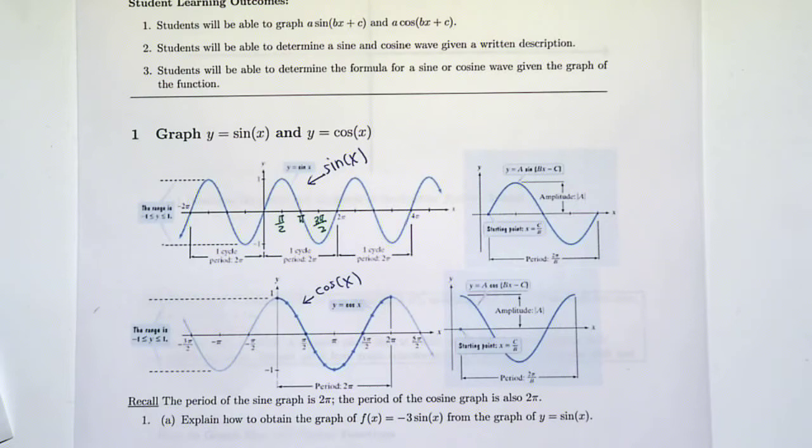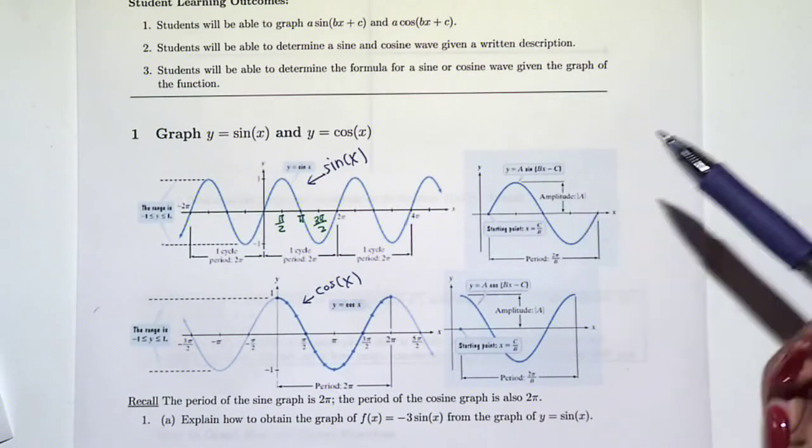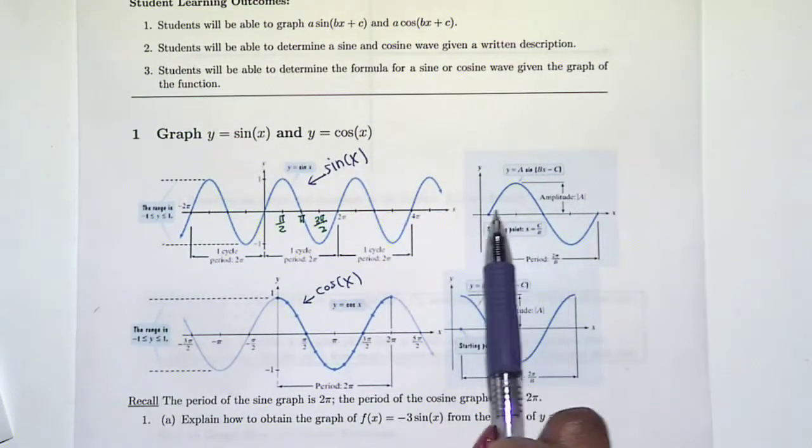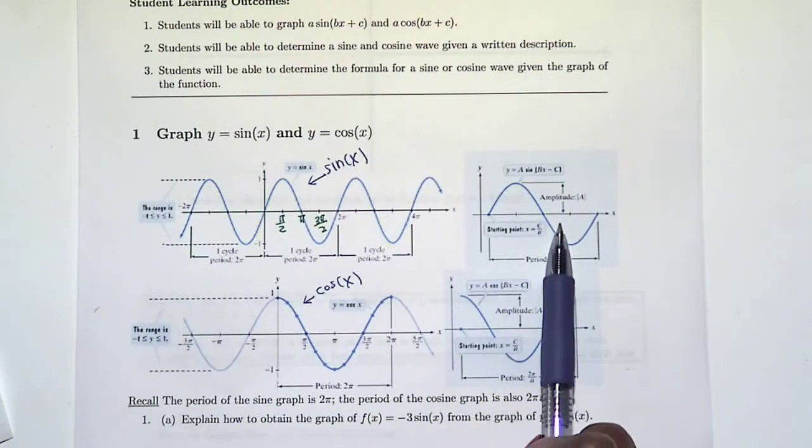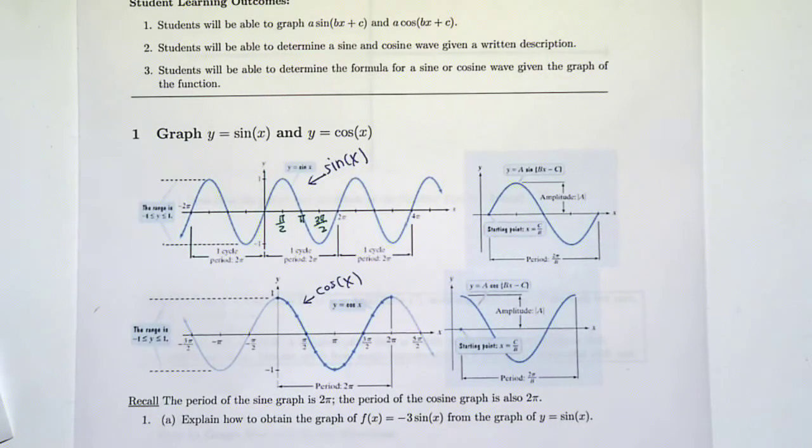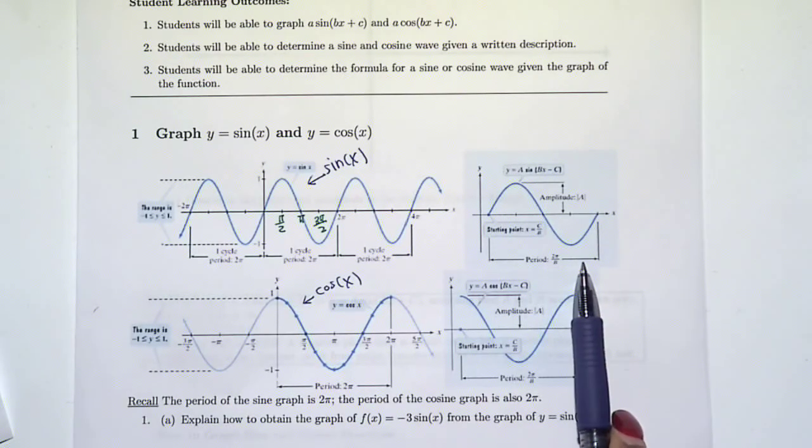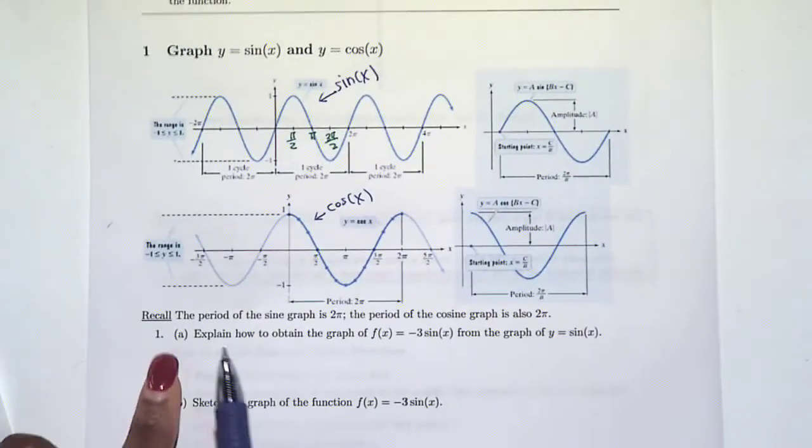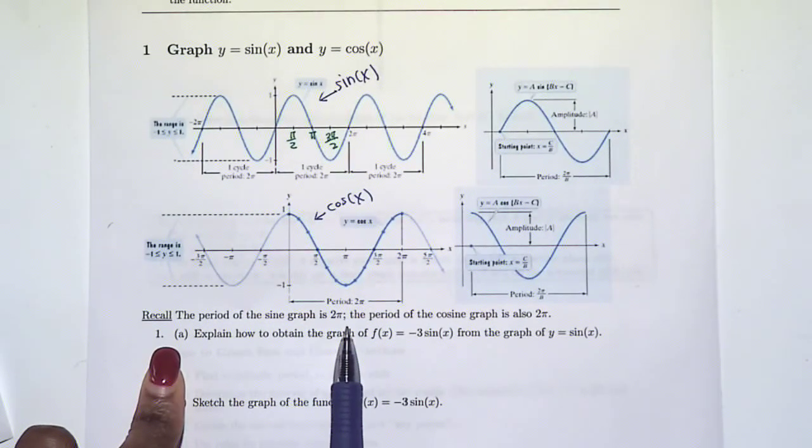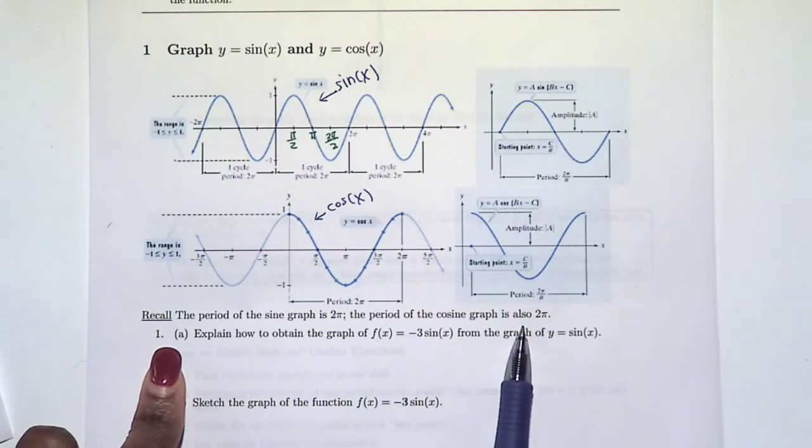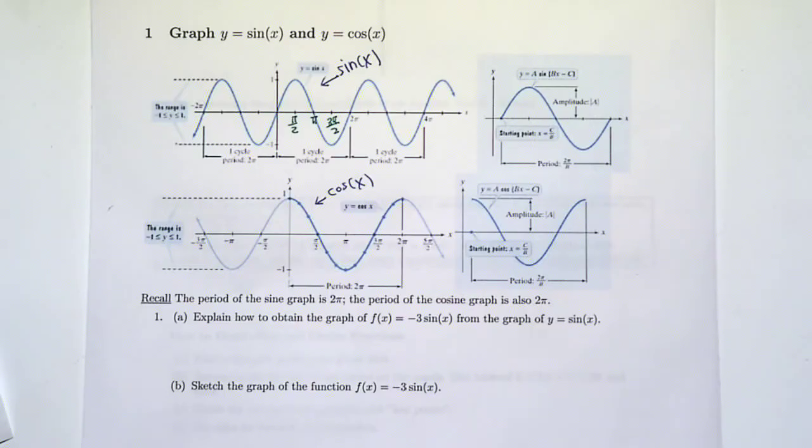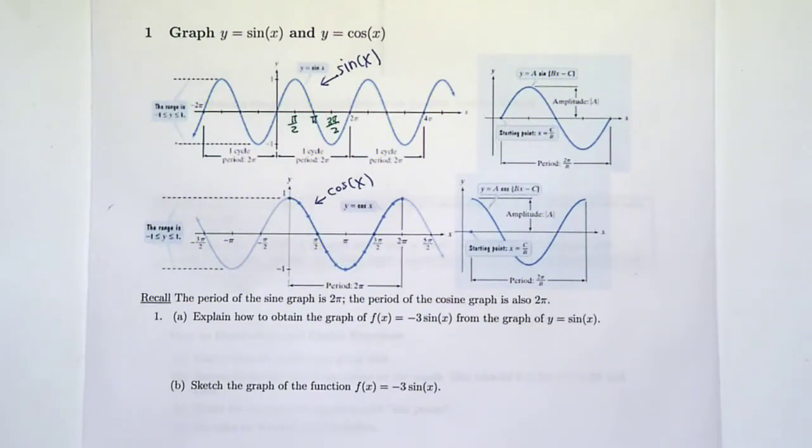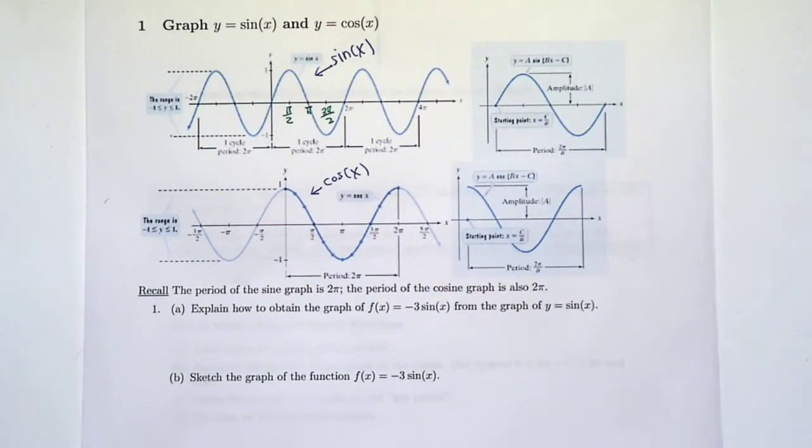We have some other terms that we're going to get used to, like amplitude. The distance from the middle of the graph to the highest or lowest point is our amplitude. We're going to get a formula to figure out what the period of a graph is, because it could change. The period of the sine graph is 2π, and the period of the cosine graph is also 2π. That's how long it takes to repeat.